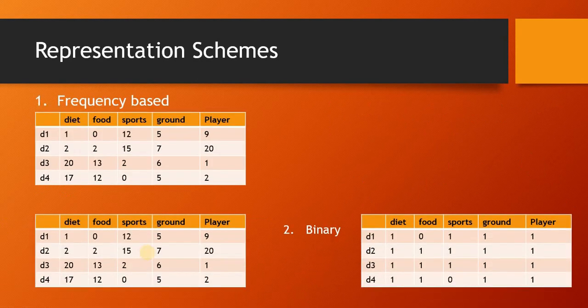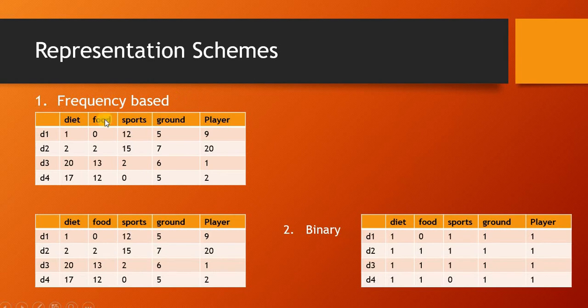Some of the other representation schemes: if we consider a hypothetical dataset that has 'date' occurring in document 1, 'sports' occurring 12 times, 'ground' 5 times, and similarly we have frequency-based representation of all these unique features in these four documents, which is all we have in the dataset.